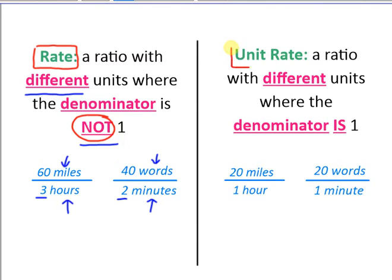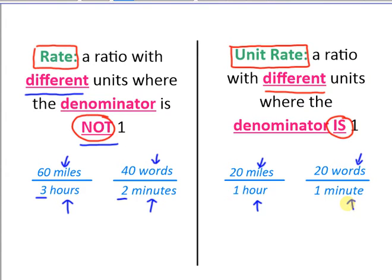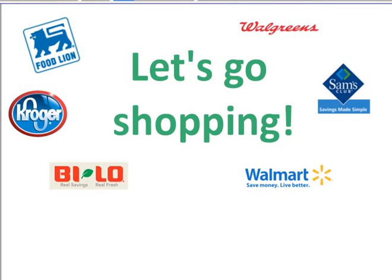With a unit rate, it is also a ratio with different units, but the denominator is one. Here we have miles on top and hours on the bottom; here we have words on top and minutes on the bottom. So we have different units, but the denominator is one in both cases. What the unit rate does is it brings it down to the most basic level. We're going to apply this to some real-life shopping.